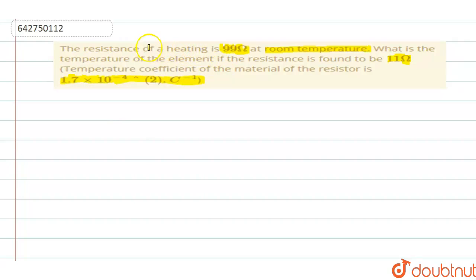In the question they are telling the resistance of one heating element is 99 Ohms at room temperature. Then they change the temperature and when the temperature has changed the resistance is 11 Ohms. They are asking what is that temperature at which the resistance is 11 Ohms. The temperature coefficient of that particular material they have given the value.